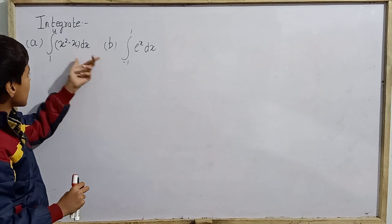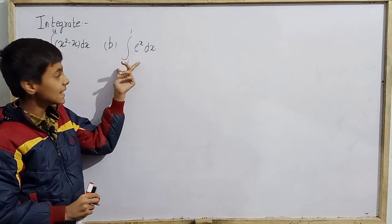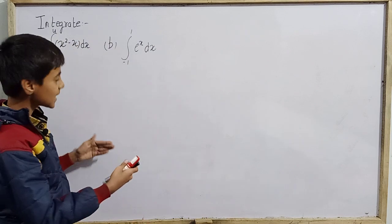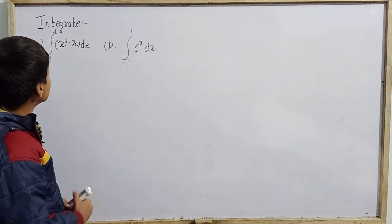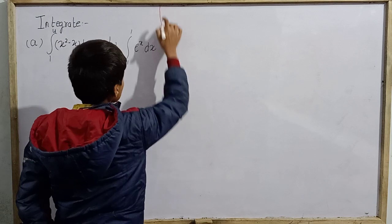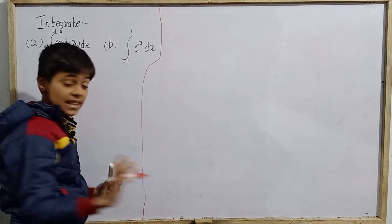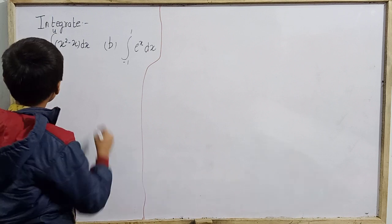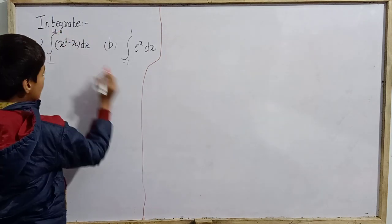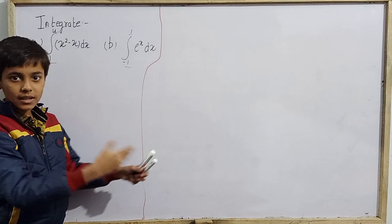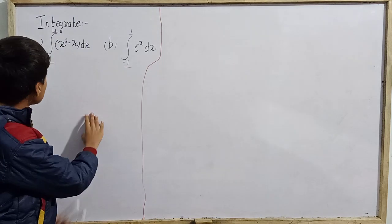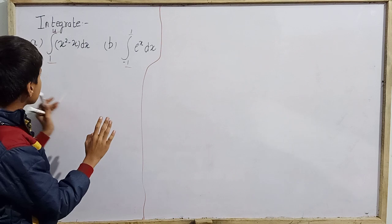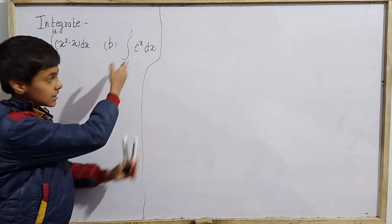Question (a) is the integral from 1 to 4 of (x² - x) dx, and question (b) is the integral from -1 to 1 of e^x dx. These are definite integrals because we can see that lower and upper limits are given.